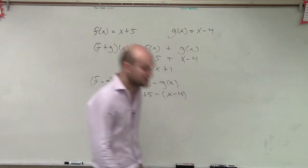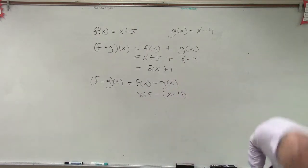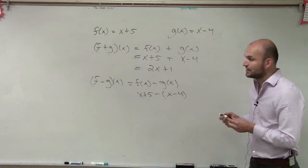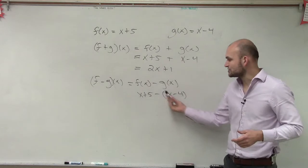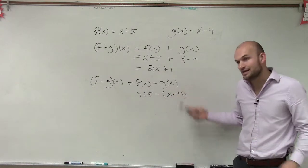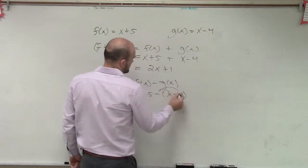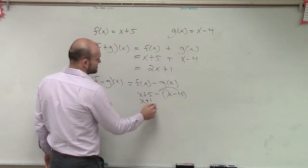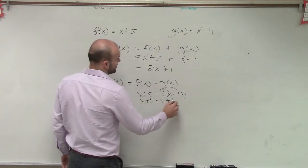Now, ladies and gentlemen, it's very important that you put this in your parentheses. The reason being is because you're not subtracting just the x, you're subtracting x minus 4. So therefore, by applying distributed property, I get x plus 5 minus x plus 4.